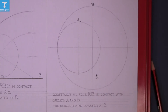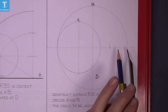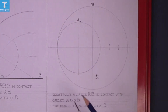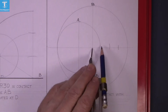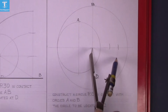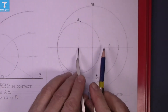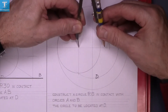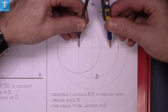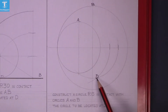First, set the compass to 15 and mark out from circle B by 15, and in from the other circle. Set the compass in the center of B, out to the arc, and scribe an arc. Do the same from center A out to this point and draw your arc.